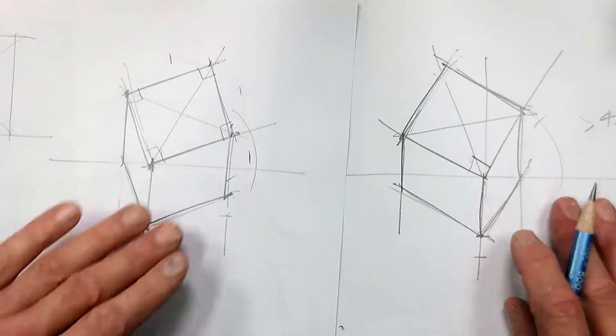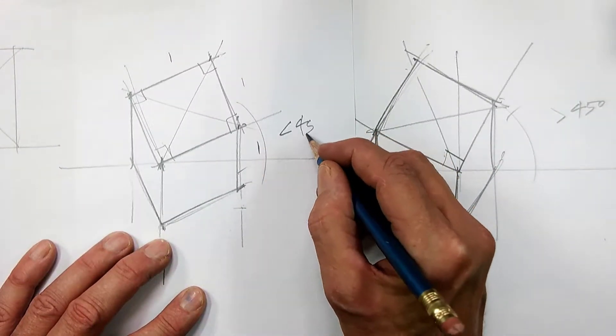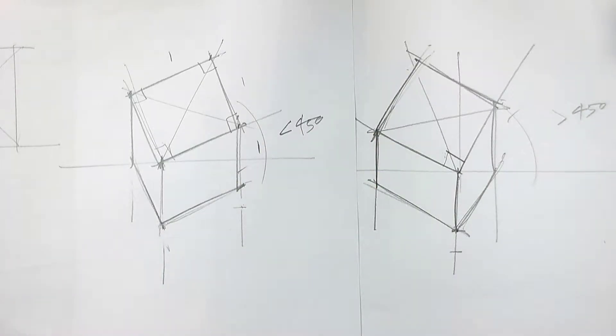And you can compare it with this one. This is less than 45. This one is greater than 45. They're both top plan oblique views of a cube. All right.